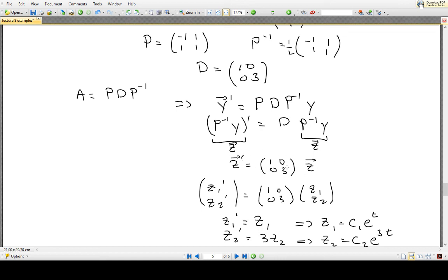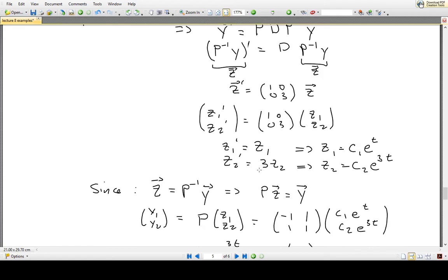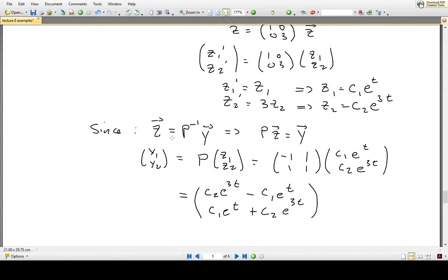Because we did that, we could actually rewrite the system as a new system, a system about the solution Z. This system was entirely decoupled, so the differential equations for Z were independent equations, so we could solve them each on their own. Once we had the functions Z1 and Z2, we can turn them back into what they needed to be for Y by just using our P matrix.